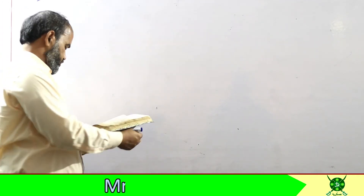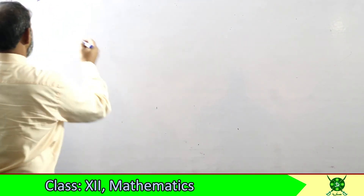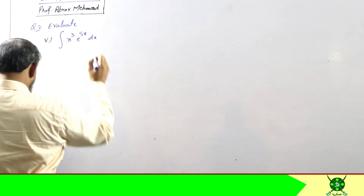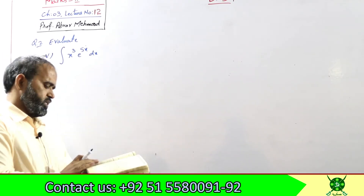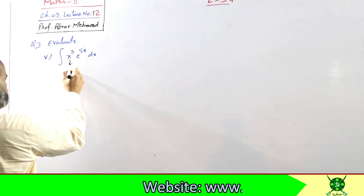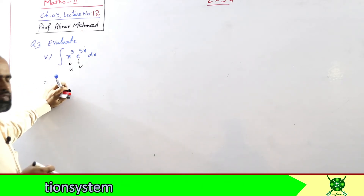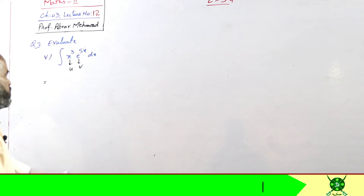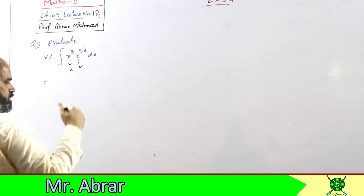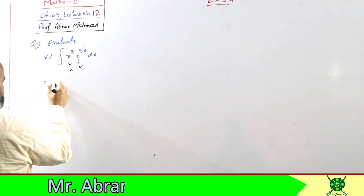Part 5 और question 4 का part 6 बिलकुल photo copy हैं। यह x³·e^(5x) dx है और वो x²·e^(ax)। इसमें x की power 3 है - यह u होगा और e^(5x) v होगा। जितनी u की power होती है उतनी दफ़ा formula apply होता है। Power 3 है तो पहली बार 2 रह जाएगी, दूसरी बार power 1 रहेगी, तीसरी बार x खत्म हो जाएगा।